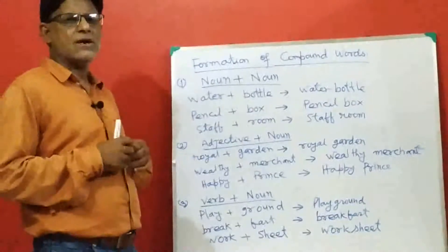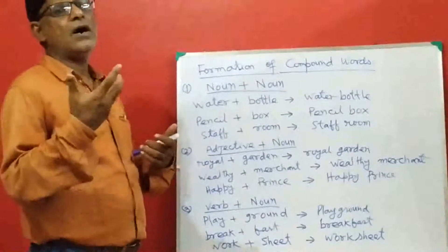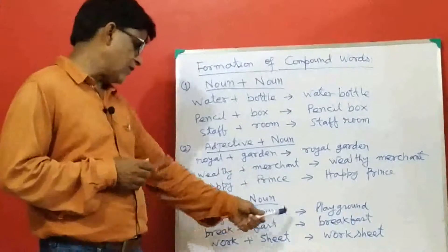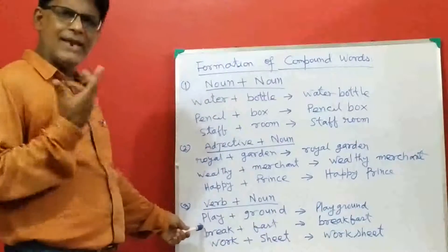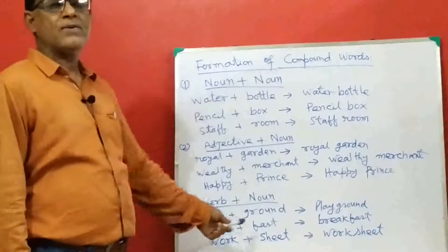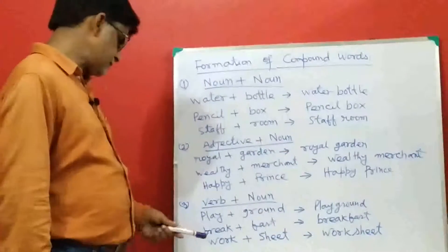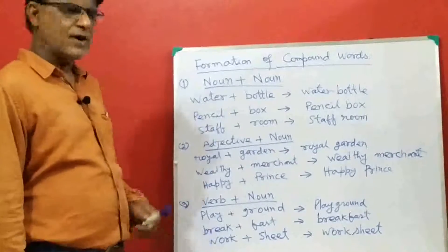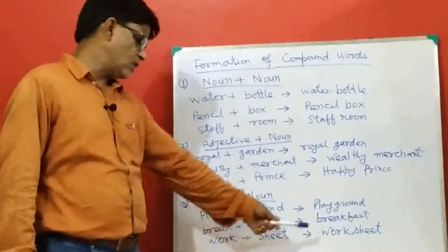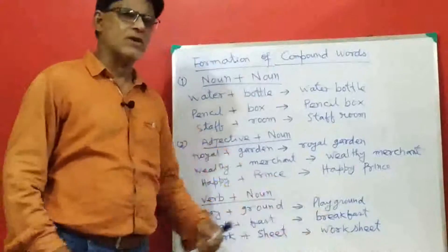Similarly, compound words are formed by joining one verb to a noun. For example, play plus ground gives playground; play is a verb and ground is a noun. Break plus fast gives breakfast; break is a verb and fast is a noun. Work plus sheet gives worksheet; work is a verb and sheet is a noun.